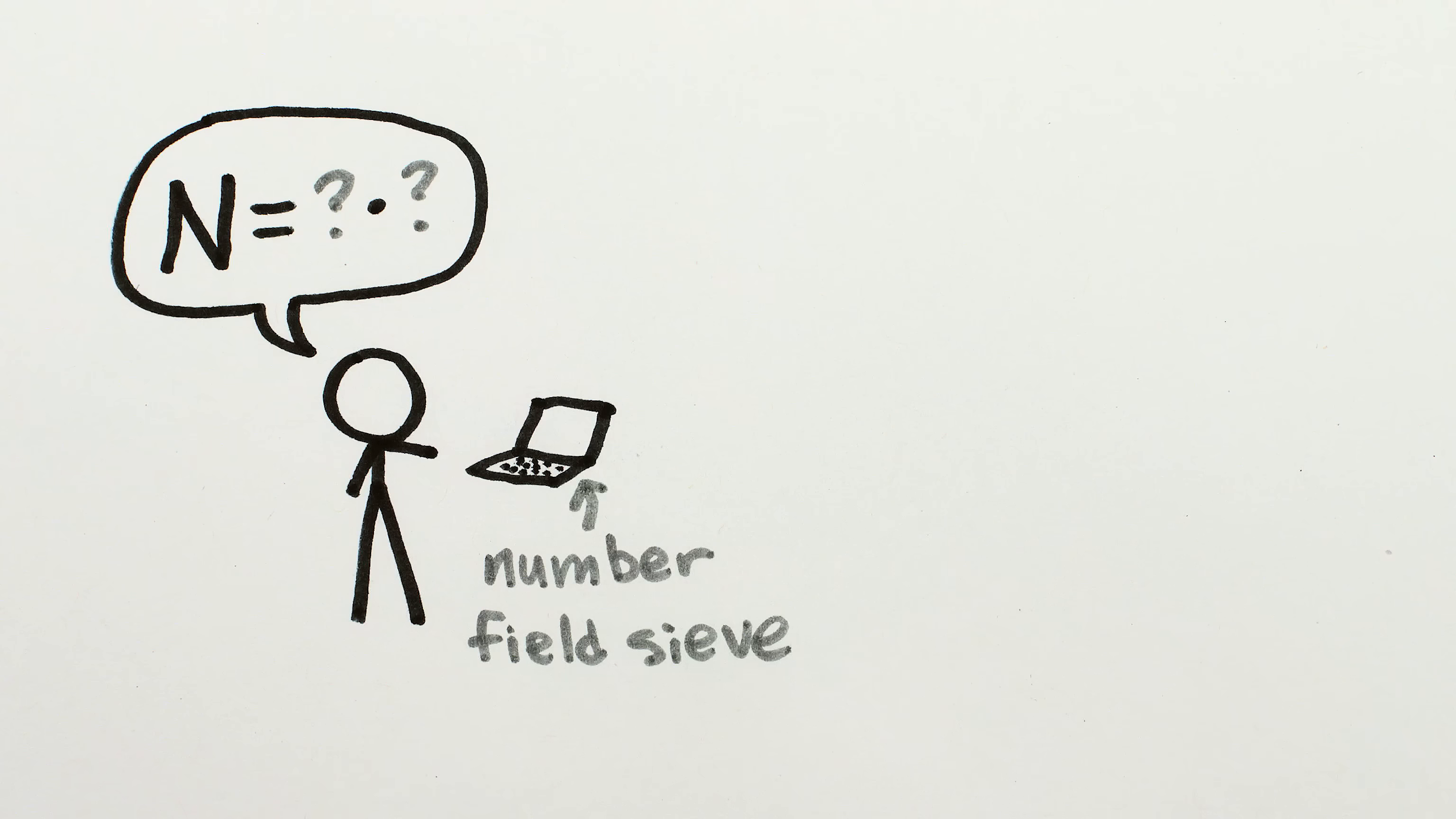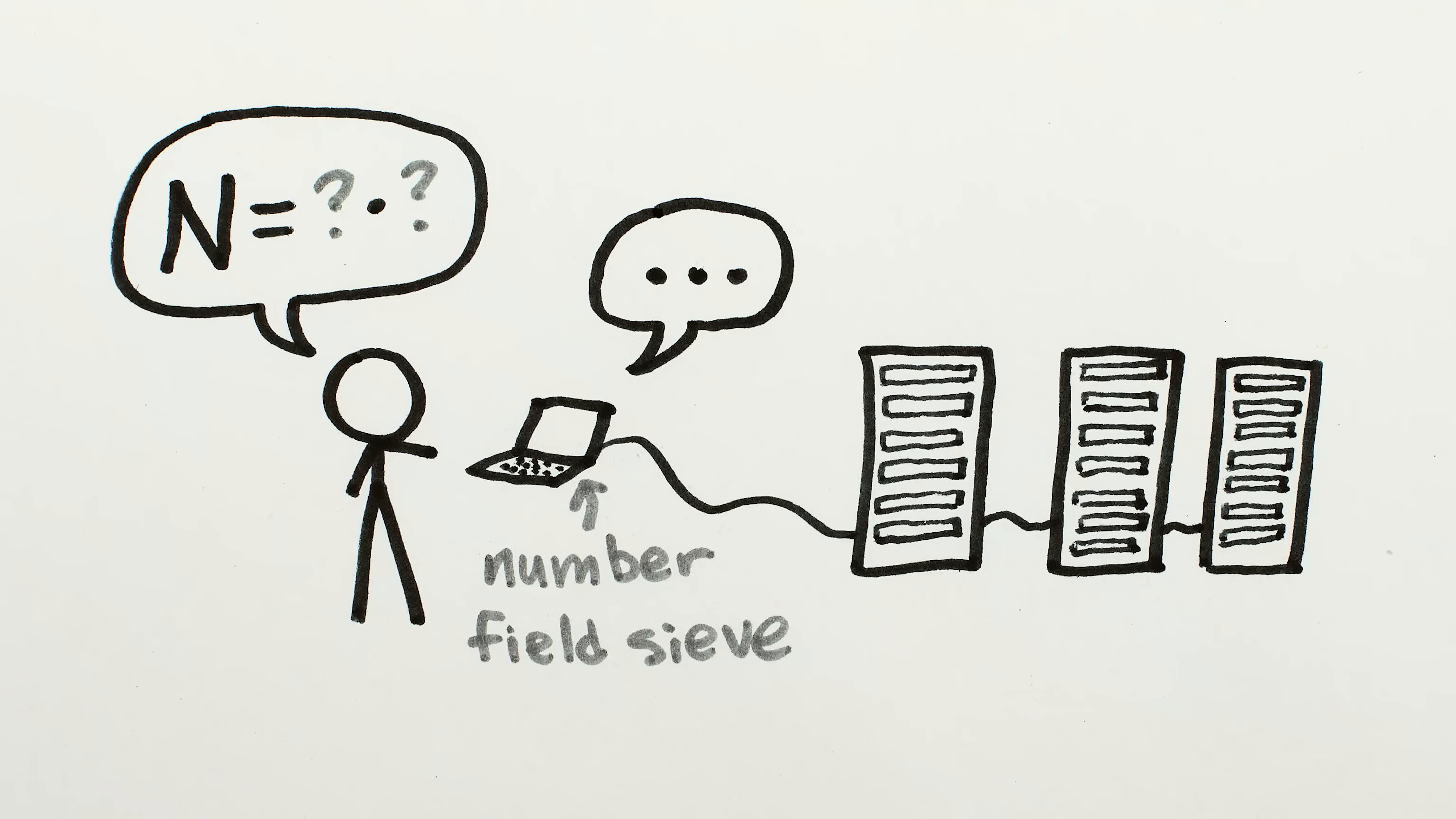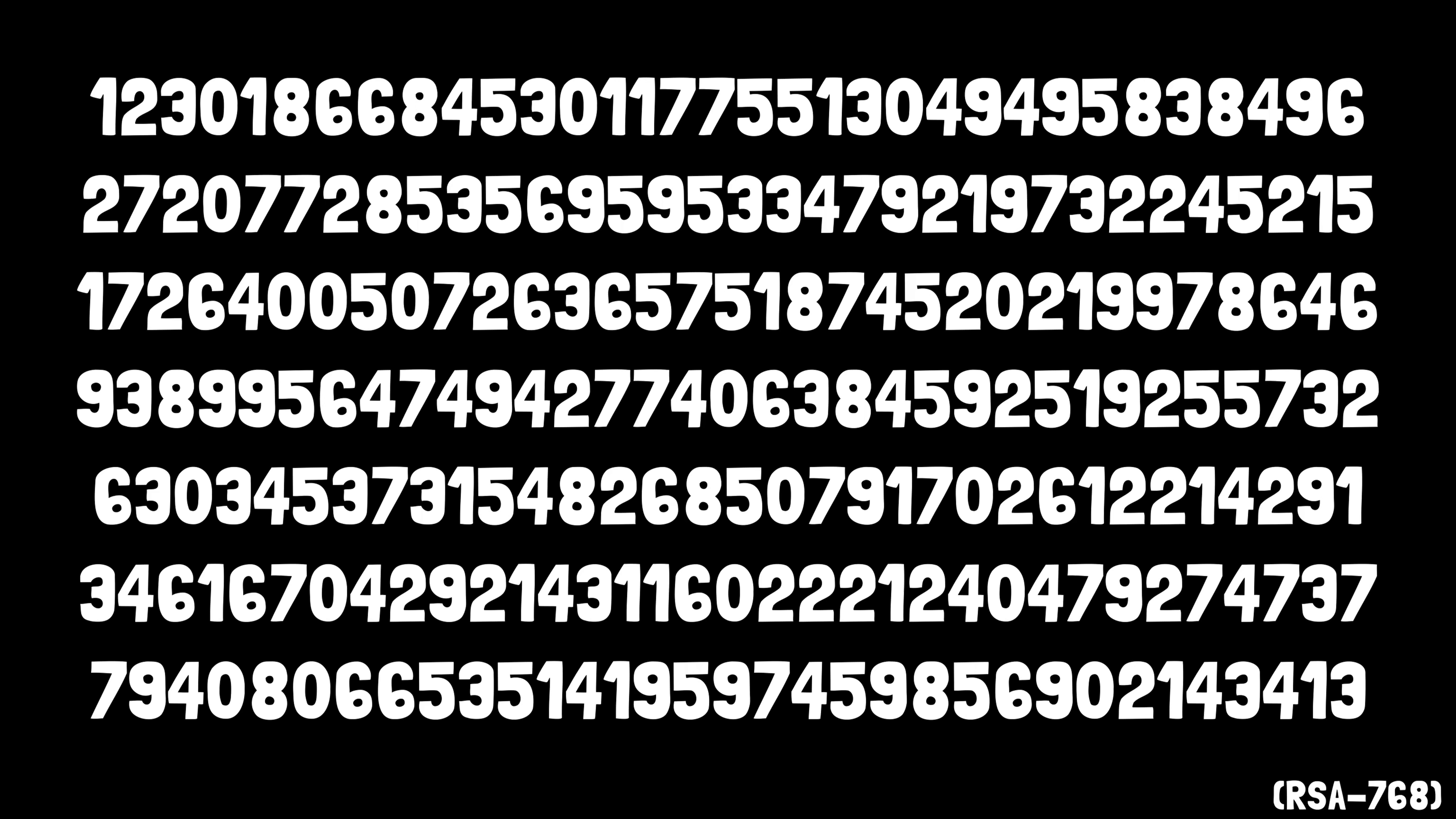At least, the best approach we currently have that runs on a normal computer, even a very powerful one, is very slow. Like, to find the factors of this number, it took 2,000 years of computer processor time.